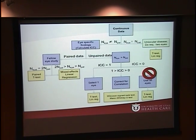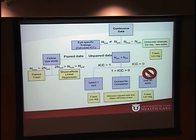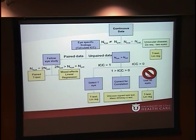There are three scenarios for unpaired data. First, when the ICC equals zero — meaning no correlation — data is completely independent and all available data can be used with standard techniques. However, this is never the case in ophthalmology, as there is always some correlation between eyes. Second, when the ICC equals one — perfectly correlated — the left eye is equivalent to the right eye, and it is efficient to discard one eye per patient, allowing use of standard techniques like t-test or linear regression. This is also very rare, though clinical criteria may sometimes justify this approach.